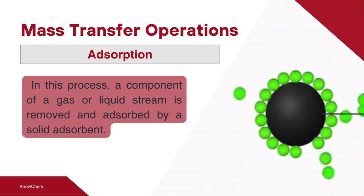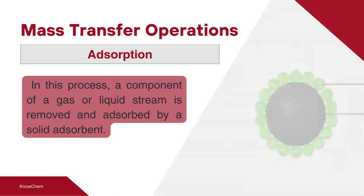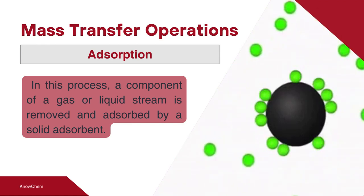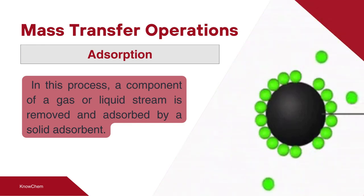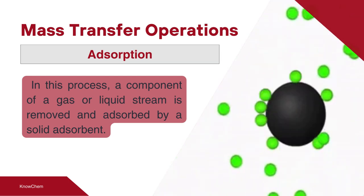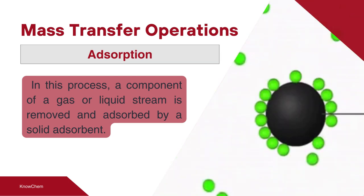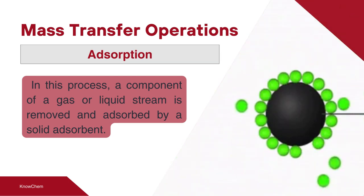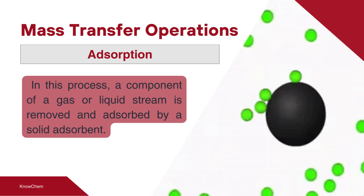In adsorption, the components of a gas or liquid stream are removed by passing the stream over the surface of an adsorbent, on which the particles get adsorbed. In simple terms, molecules of color or odor get adsorbed when colored water is passed through a bed of activated carbon.